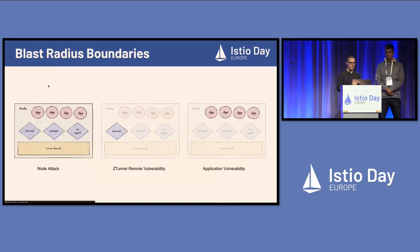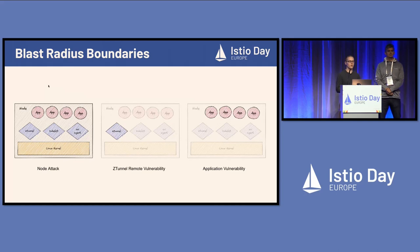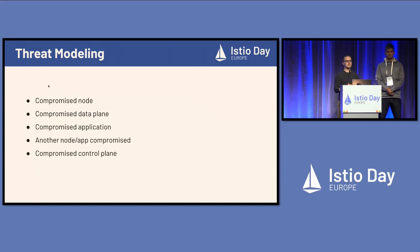The other thing to understand is the blast radius of these boundaries. A node attack gives a malicious actor root access on the node — significant impact. A compromised data plane, whether z-tunnel or Envoy, could happen via remote code execution or a partial vulnerability. A compromised application is similar but at the application level — this also includes supply chain exploits where malicious code was injected and deployed to production. We'll go through each of these situations and compare ambient and sidecar head-to-head.